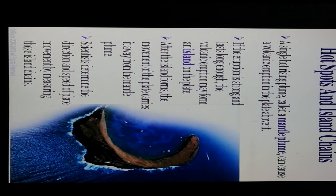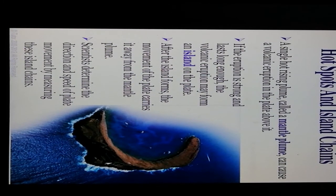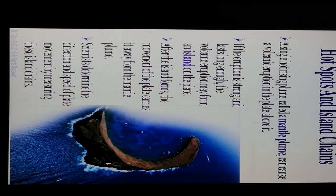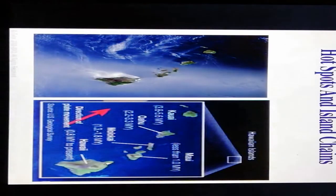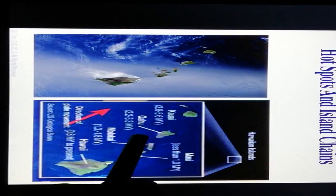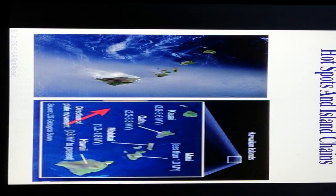Hotspots and island chains: a single hotspot rising plume called a mantle plume is a hotspot region that can cause volcanic eruptions. If the eruption is strong and lasts long enough, the volcanic eruption may form islands. After the islands form, movement of the plate carries them away from the mantle plume. Scientists determine the direction and speed of plate movement by measuring these island chains. An example is the Hawaiian Islands: Kauai, Oahu, Molokai, Maui, and Hawaii.